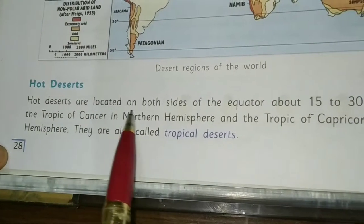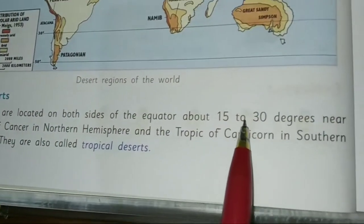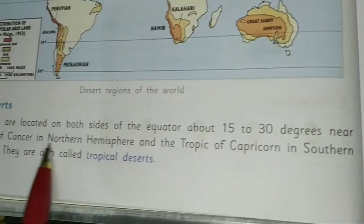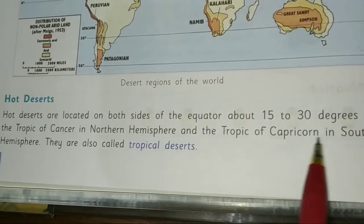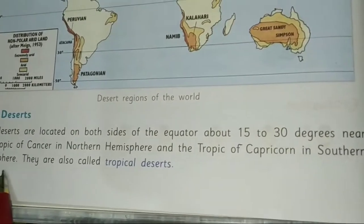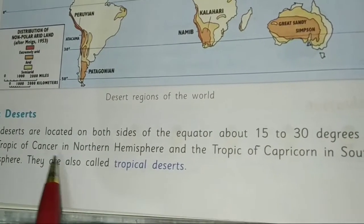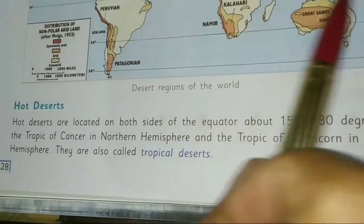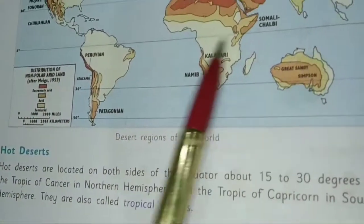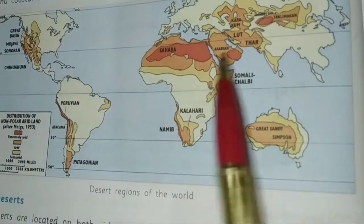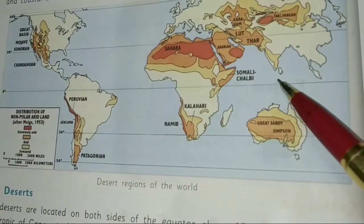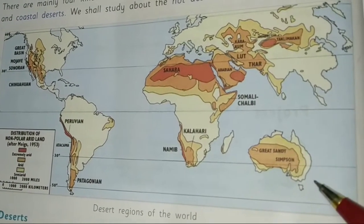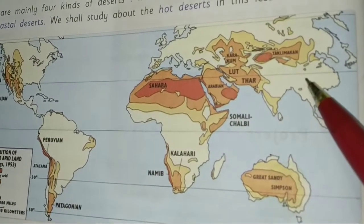Hot deserts are located on both sides of the equator, about 15 to 30 degrees near the Tropic of Cancer in the Northern Hemisphere and the Tropic of Capricorn in the Southern Hemisphere.